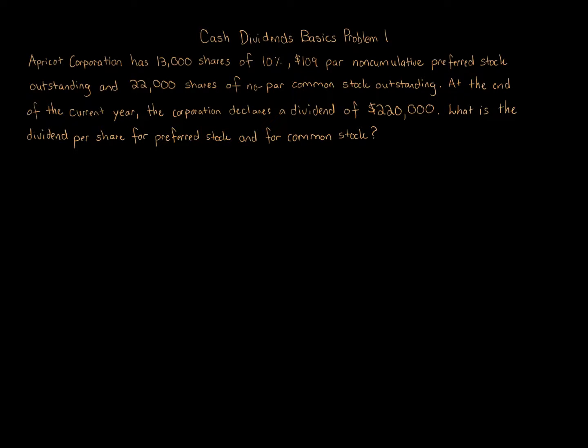We've got a dividend question. We need to calculate both preferred and common stock per share. One thing to note: if a problem just says dividend, it's assumed to be a cash dividend. It has to say stock dividend to be a stock dividend. This problem just says declares a dividend and gives the dollar amount, so it's assumed to be a cash dividend.